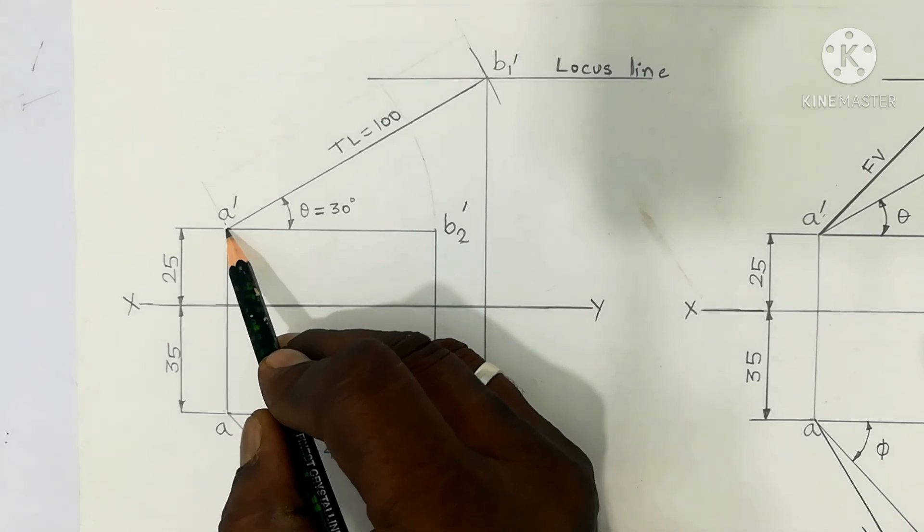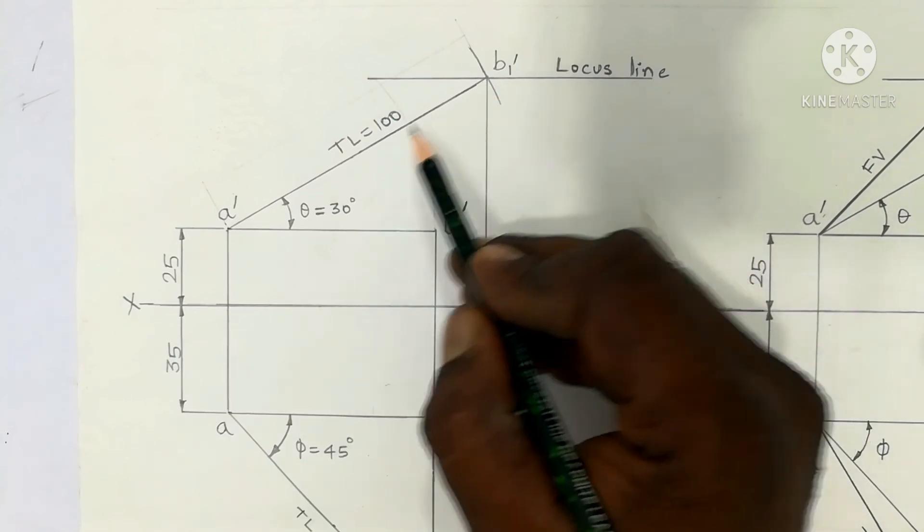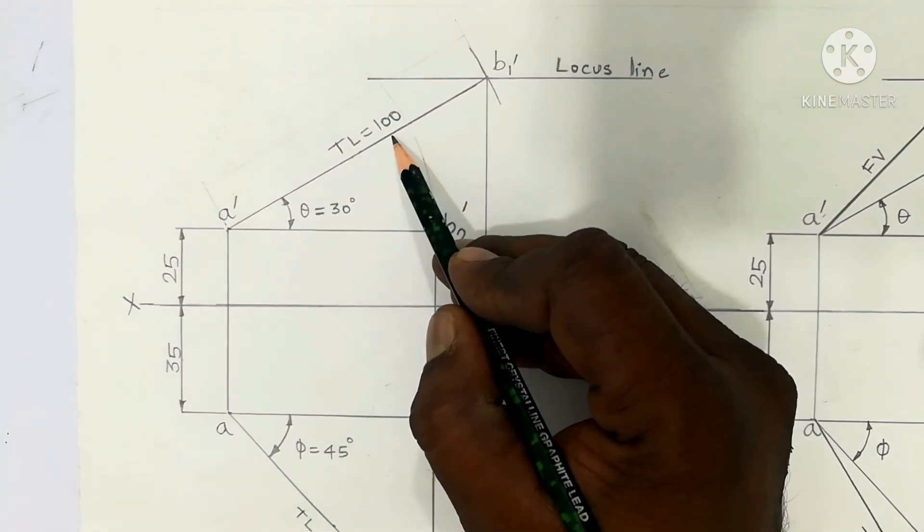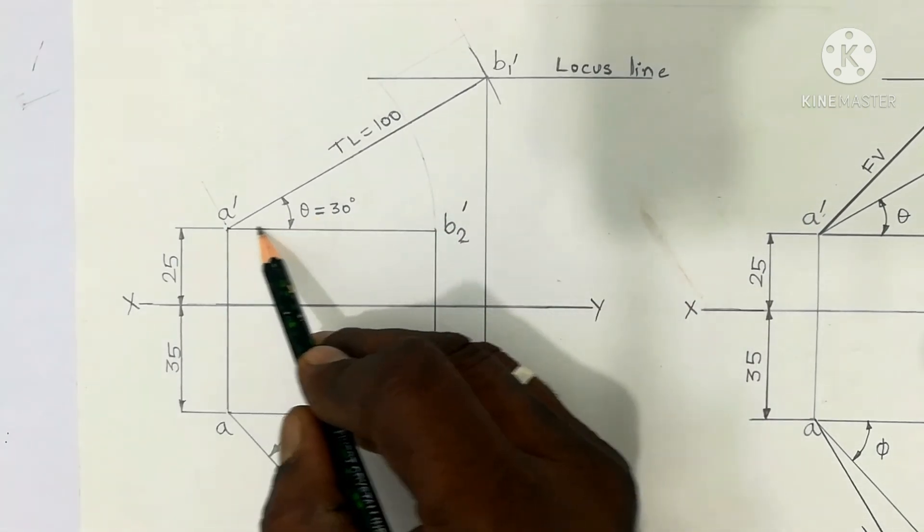A into point 25mm above HP, 30 degree inclined line. This is true length of the line and the length is 10cm, 100mm. If inclined to HP consider it.